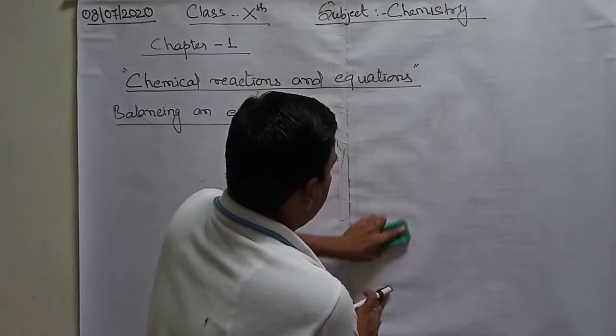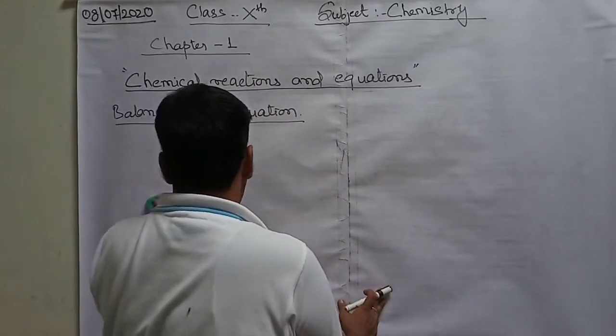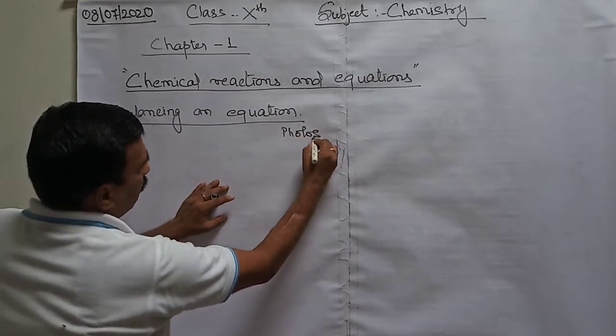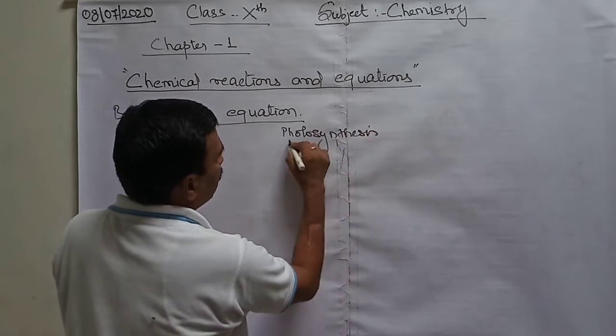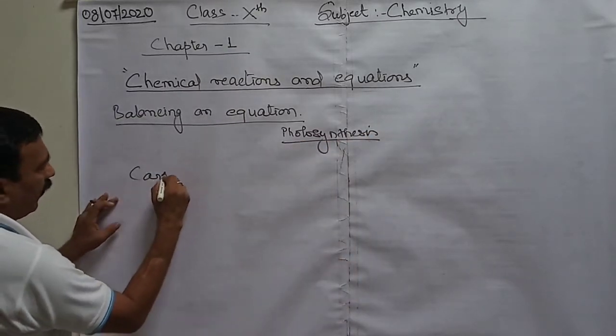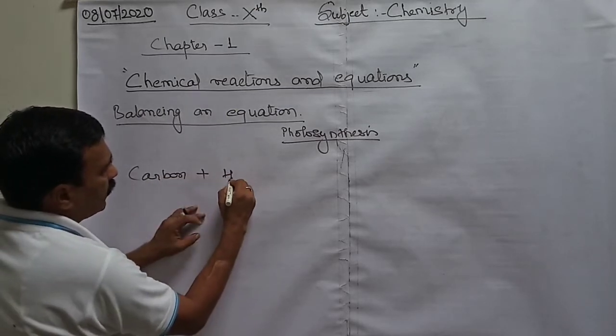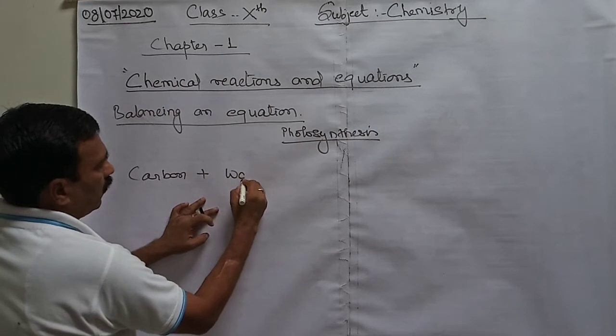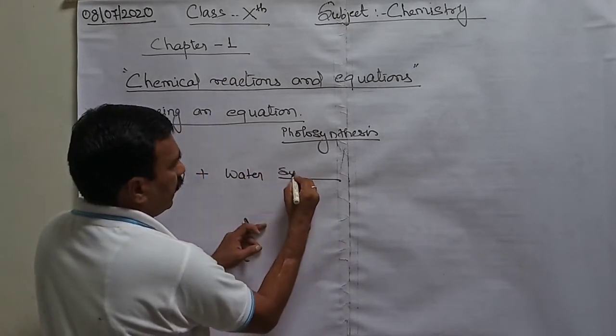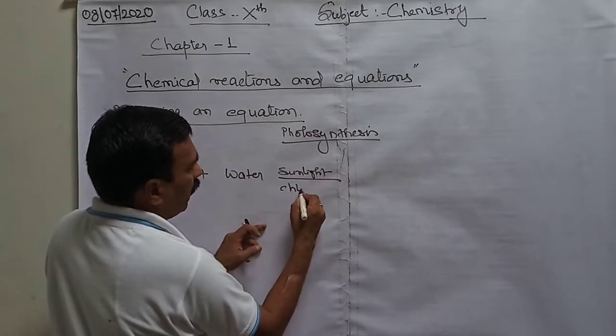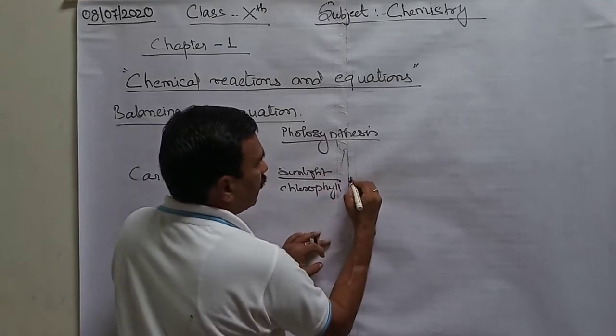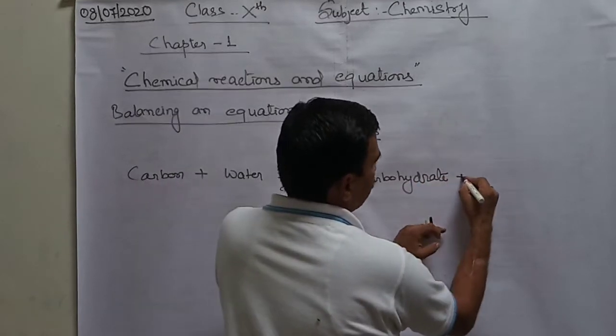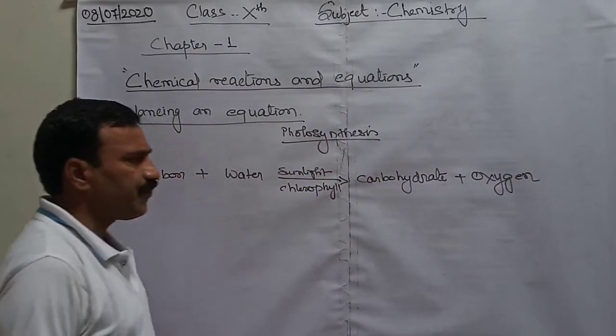Now, you know the process of photosynthesis. Photosynthesis is a process in which carbon combines with water, in the presence of sunlight, by the help of chlorophyll, gives carbohydrate or glucose plus oxygen.